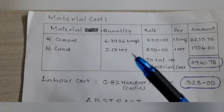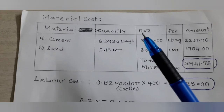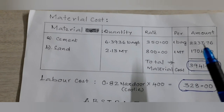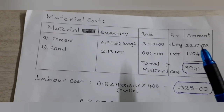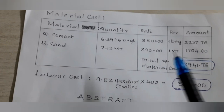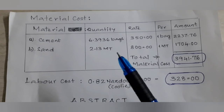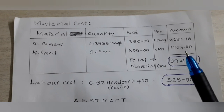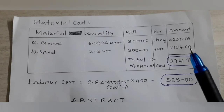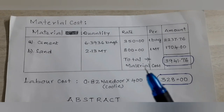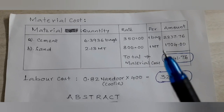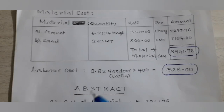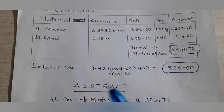For material cost: cement requirement is 6.3936 bags and the present rate is 350 rupees per bag, giving a total cost of 2237.76 rupees. Sand required is 2.13 metric tons at a present rate of 800 rupees per metric ton, giving a total cost of 1704 rupees. Total material cost, by adding cement and sand costs, equals 3941.76 rupees.